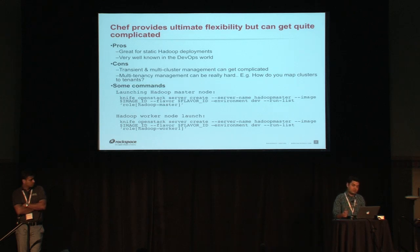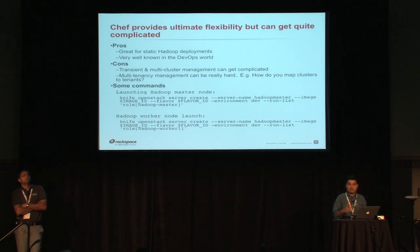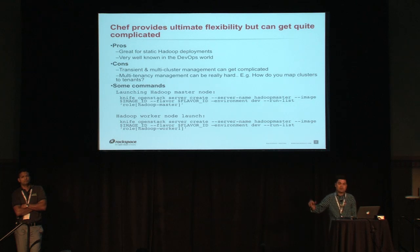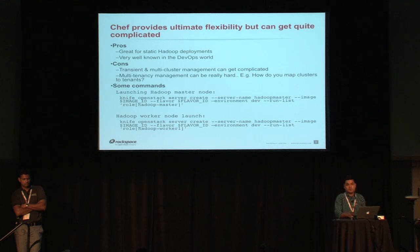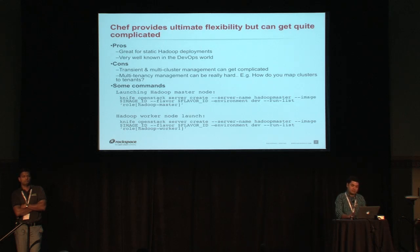With Chef and the knife plugin, you could do something like 'knife openstack server create' with an image and flavor, and give it a role of master node or data node. As you need more data nodes, you keep doing knife server create for them. Most people who do Hadoop on cloud use Chef, and they can use the same recipes for dedicated servers too — it doesn't have to be cloud.